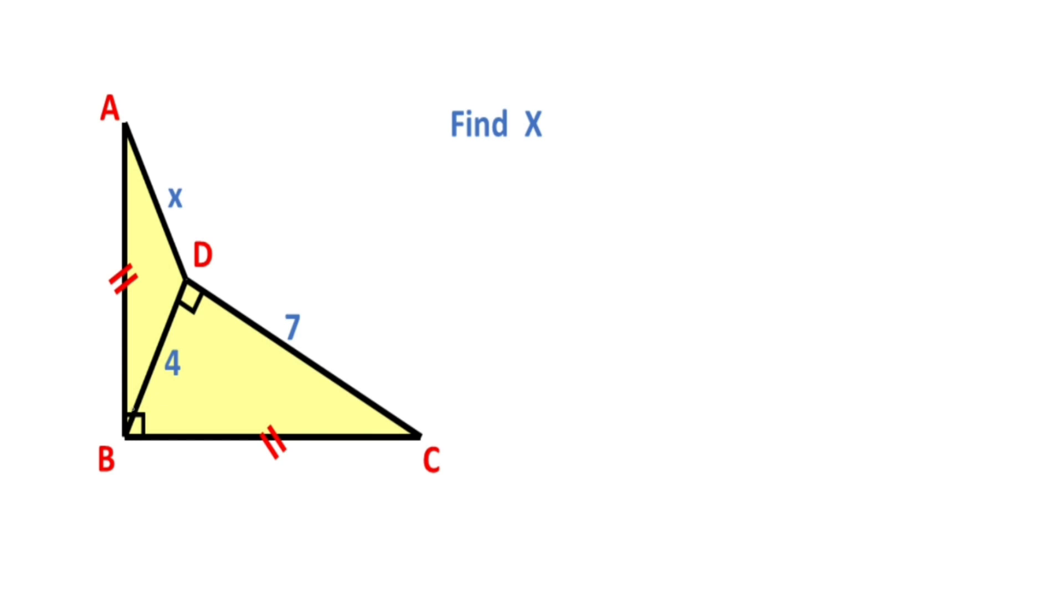First of all, let's call here alpha and here I'm going to represent with theta. We know that alpha plus theta equal 90 degrees. That means angle DCB must be equal alpha.